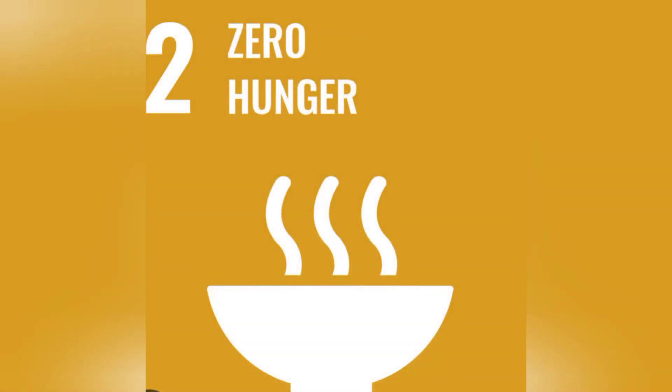Goal number two, zero hunger. Outcome target: ending hunger and improving access to food, ending all forms of malnutrition, sustainable genetic diversity of seeds, cultivated plants and farmed domestic animals. Implementation targets: addressing trade restrictions, food commodity markets and their derivatives.